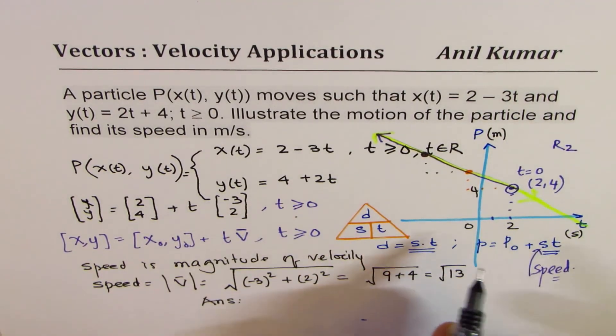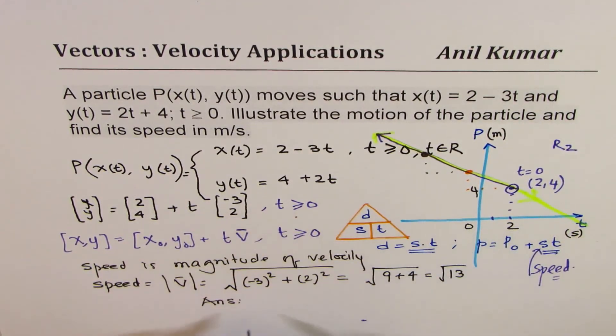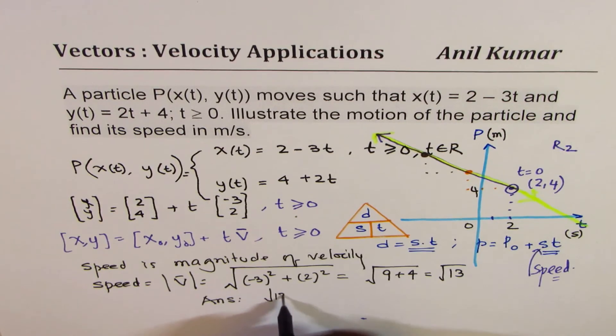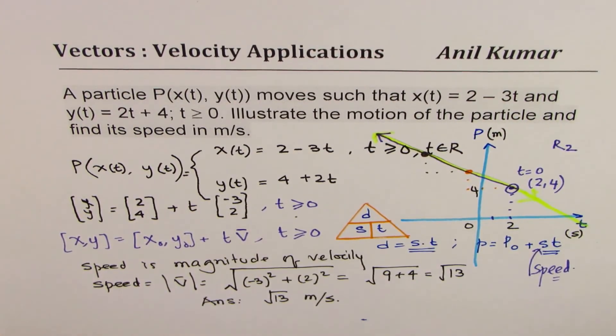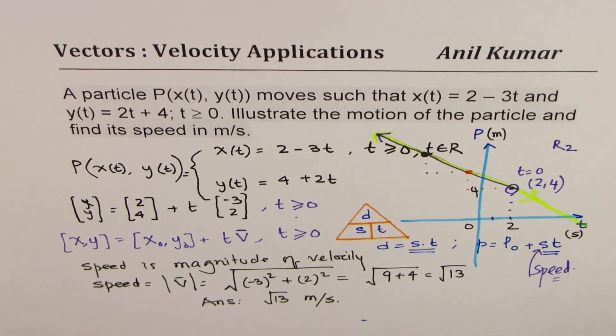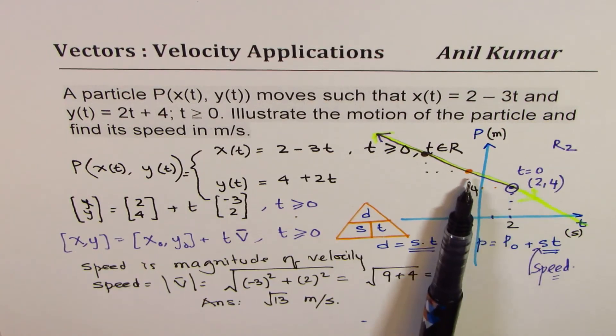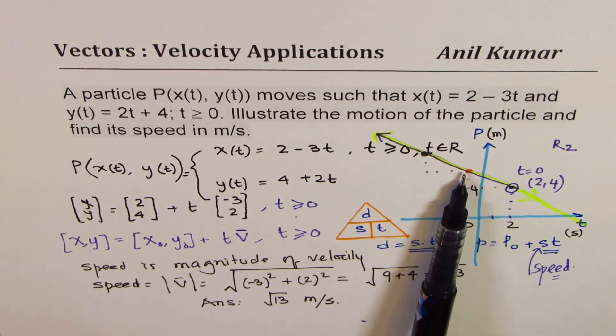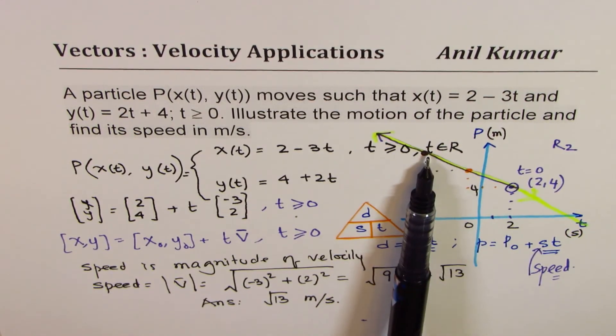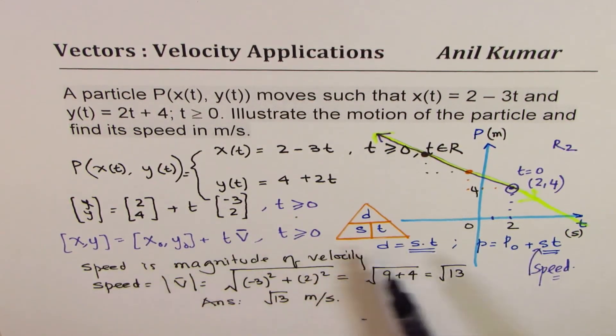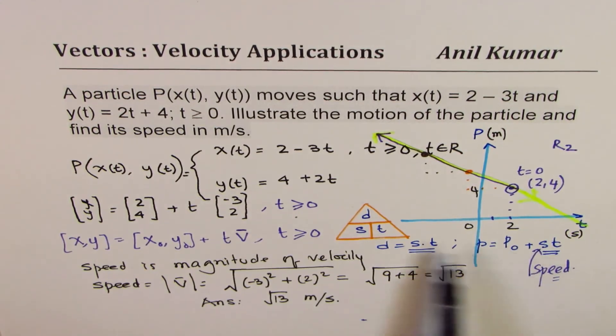Square root of 13 is the speed. Therefore our answer is that the object is moving, or the particle is moving, with the speed of square root 13 meters per second. Does it make sense to you? That is the concept of position, and whenever there is a movement we have a displacement. Rate of change of position is velocity, magnitude of velocity is speed. Do you get the idea?